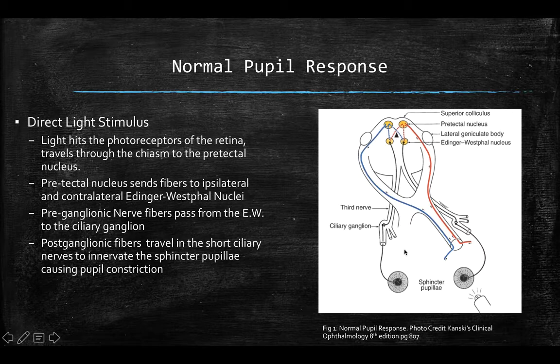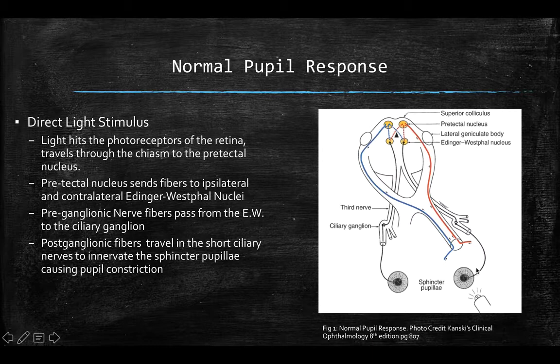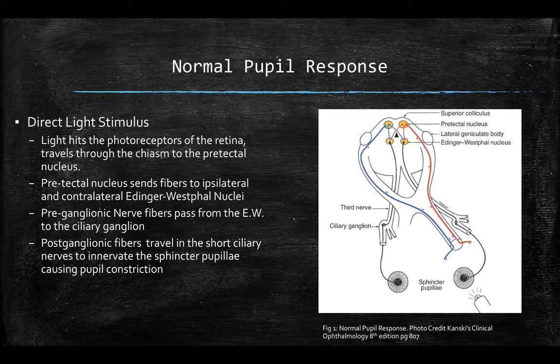Let's talk about the normal pupil response — you've covered this in neurology but we'll review it again. When you shine a light in the left eye, the first thing initiated is the signal cascade. The retinal photoreceptors in the back of the eye send a signal that travels back through the optic chiasm into a nucleus known as the pre-tectal nucleus. The pre-tectal nucleus then sends fibers to the Edinger-Westphal nucleus on the same side and the Edinger-Westphal nucleus on the contralateral side.